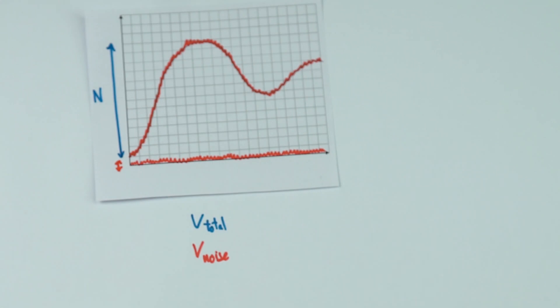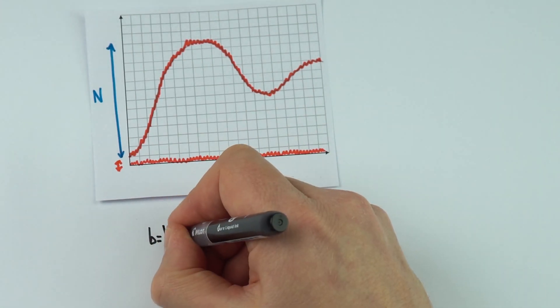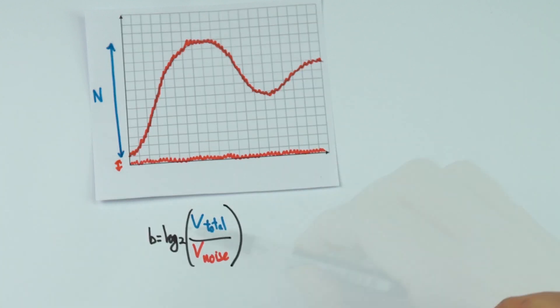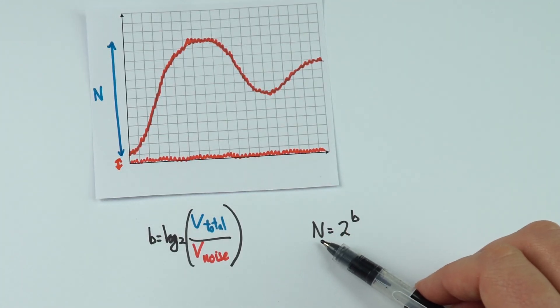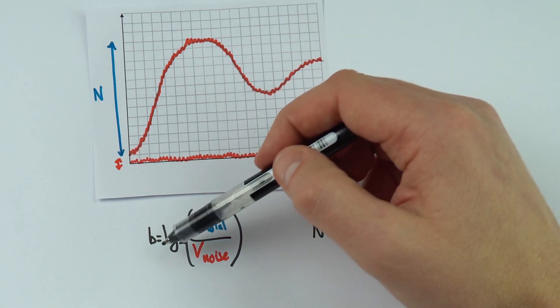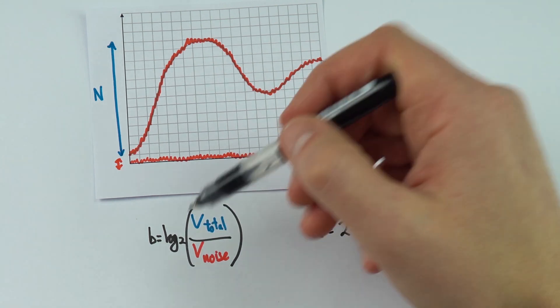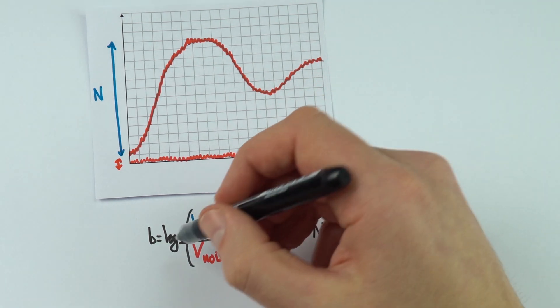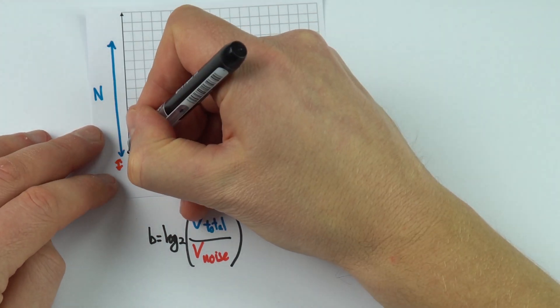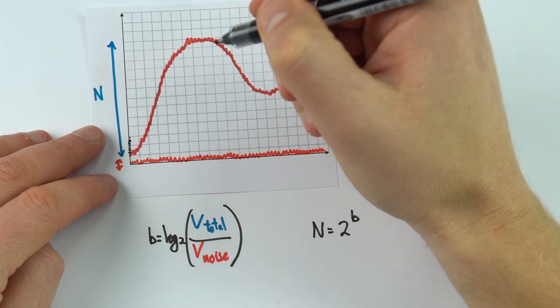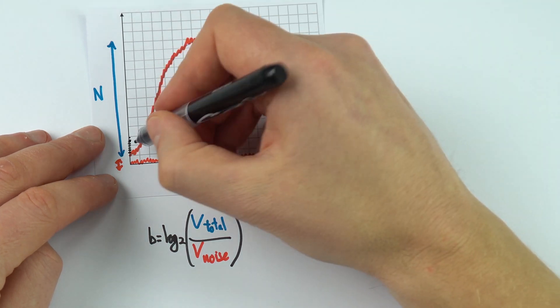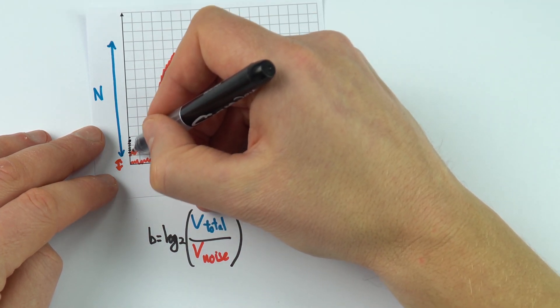When it comes to looking at how many levels of information we want to split this up into, the number of bits is equal to log to the base 2 of V total over V noise. The minimum number of bits needed to transmit this data without including the noise in that signal is equal to log 2 V total over V noise. If you're sampling at too many levels that means you're transmitting the noise in your digital signal as well. You don't want to have the resolution so great that all of the noise that you don't want is also transmitted.